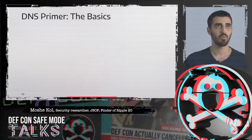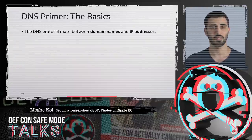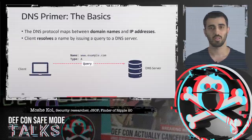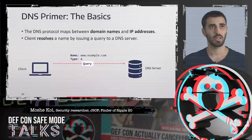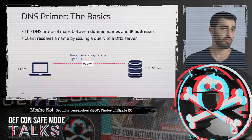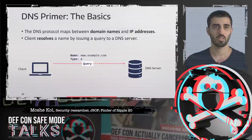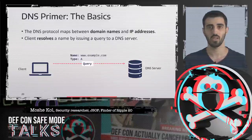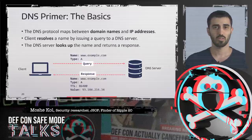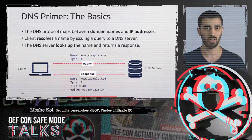First we need to refresh our memory about the DNS protocol. DNS is a core internet protocol designed to map between domain names and IP addresses. It's a query-response protocol, client-server architecture. The client resolves the name by issuing a query to a DNS server. For example, if you browse to www.example.com, your browser issues a DNS query of type A to one of the configured DNS servers, and the server looks up the name and returns the response — in this case, an IPv4 address.